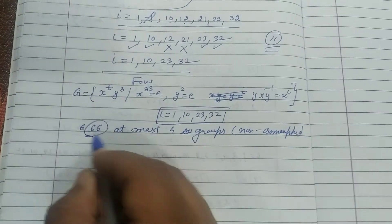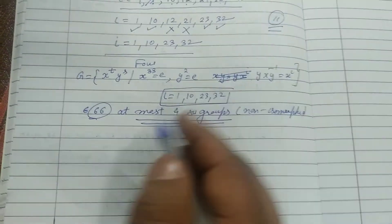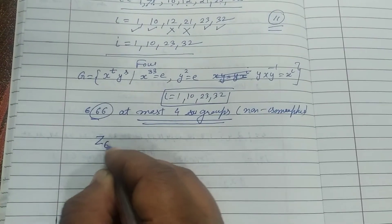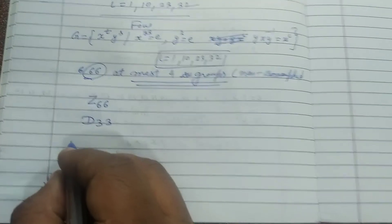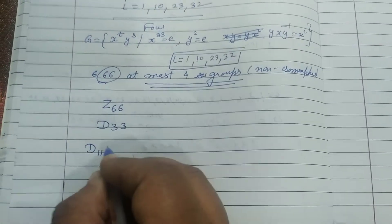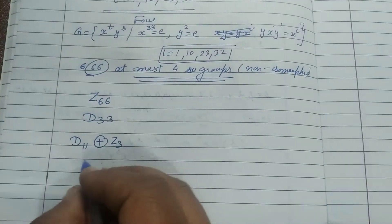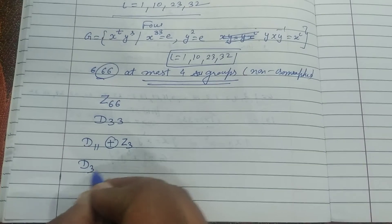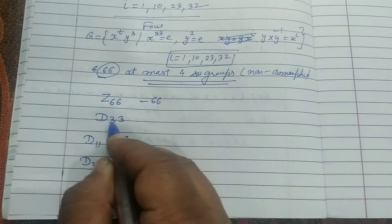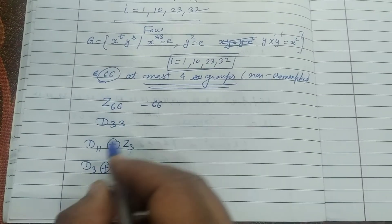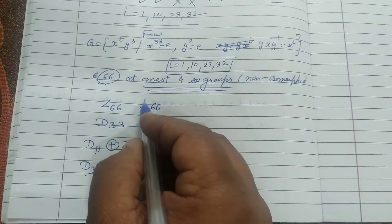Ab hum ye show karenge ki at most four nahi exactly four. First Z₆₆, phir hum likh rahe hain D₃₃, phir hum likh rahe hain D₁₁ plus Z₃, phir hum likh rahe hain D₃ Z₁₁. Ismein 66 element hai. Ismein 66 rahe hain 33 guna do, ismein 22 guna teen, ismein 6 guna gyarah, inmein 66 element hai.